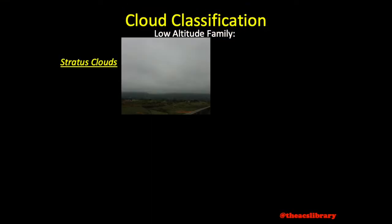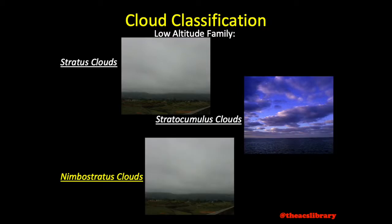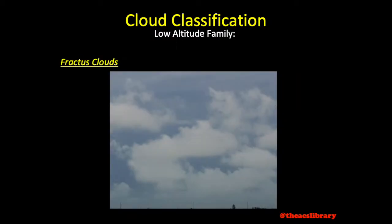The low-level family is made up of stratus clouds, often occurring as a single, uniform, featureless gray layer of cloud; stratocumulus clouds, occurring in patches of white or grayish clouds; and nimbostratus clouds, which are just stratus clouds producing precipitation. Stratus fractus and cumulofractus often occur underneath altostratus or nimbostratus clouds and are associated with precipitation.